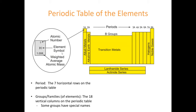Here we have the periodic table of elements. Just some general stuff about the periodic table. As you can see, it's kind of divided up into little categories across the top. Seven periods going horizontally and 18 vertical columns going this way. If you were to count all of the columns in here, there are 18, and then there are seven horizontal rows on the periodic table, which are called the periods. Within the periodic table, we also have some groups of elements that have similar characteristics or properties.